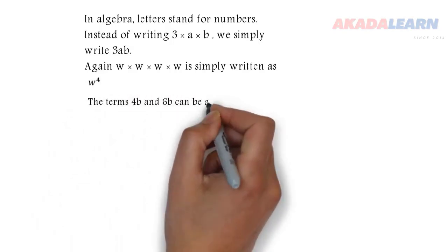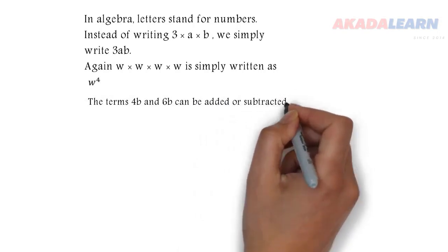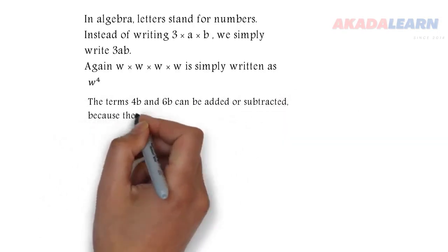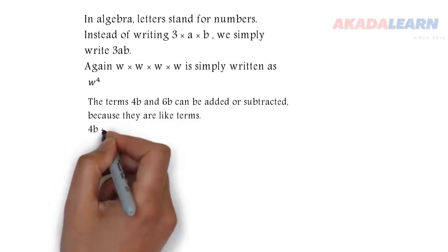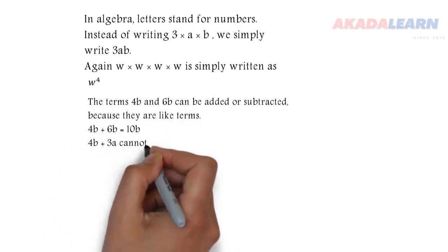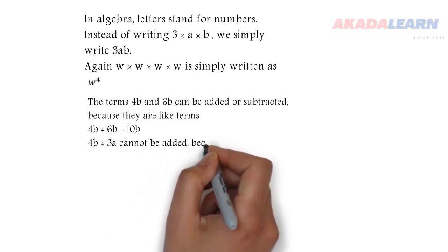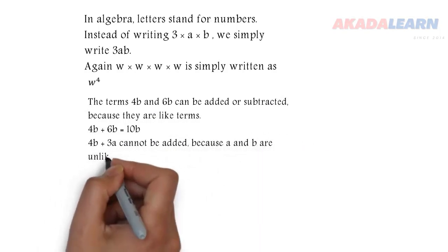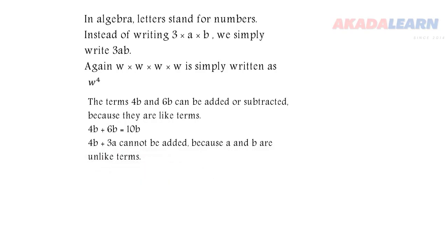Now let's see like and unlike terms. 4B and 6B can be added together to get 10B. Why? Because they are like terms. But 4B and 3E cannot be added together. Why? Because they are unlike terms. A and B are unlike terms.